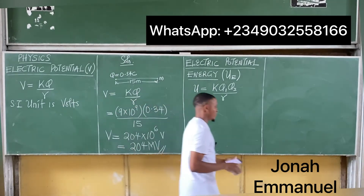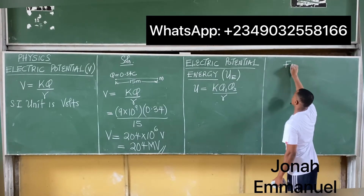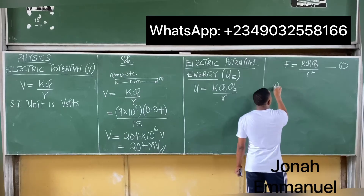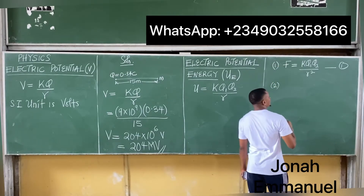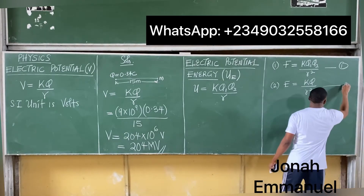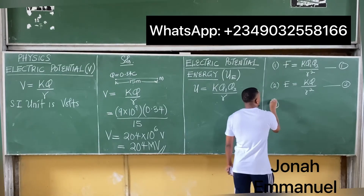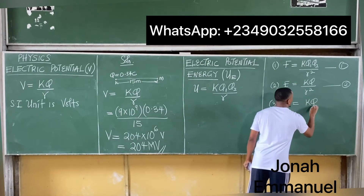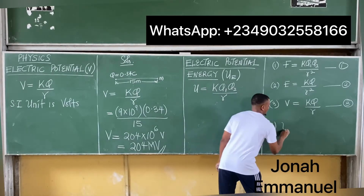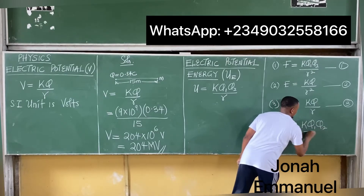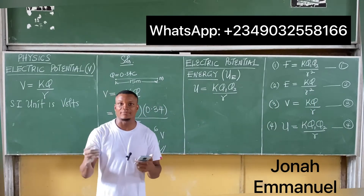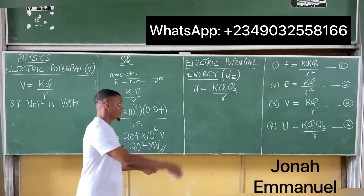Compare all four formulas: Coulomb's Law F = kq1q2/r²; Electric Field E = kq/r²; Electric Potential V = kq/r; and Electrostatic Potential Energy U = kq1q2/r. They are very similar — notice the slight differences: whether distance is squared and whether one or two charges appear.